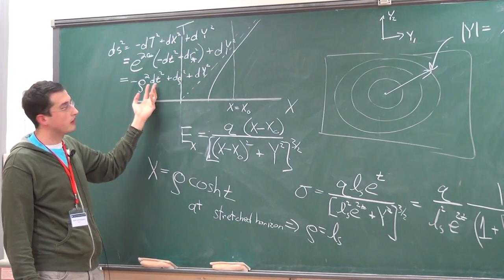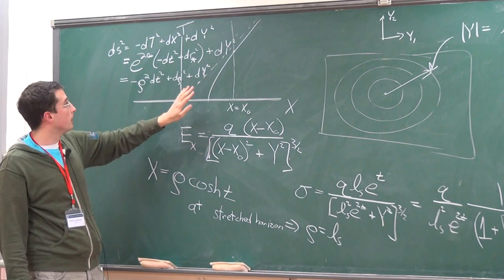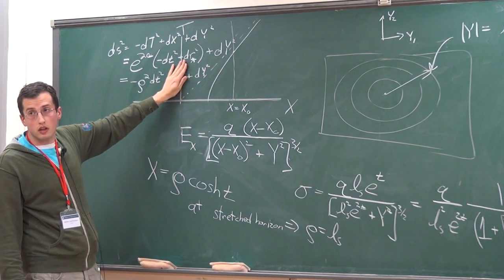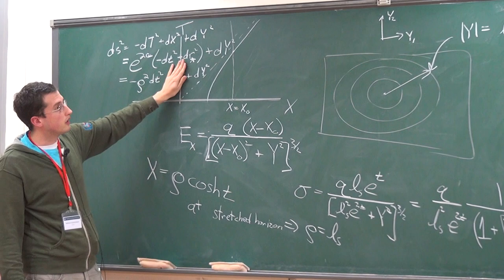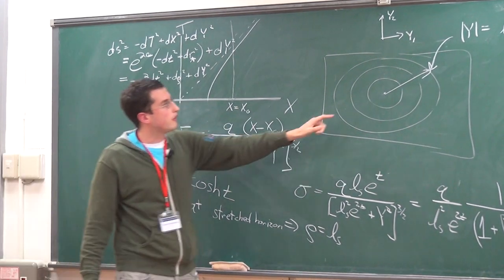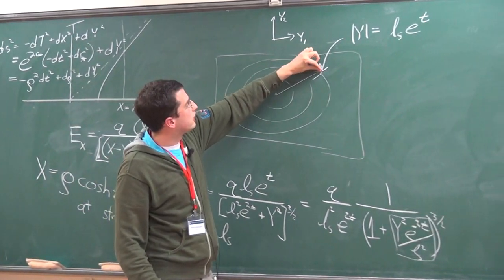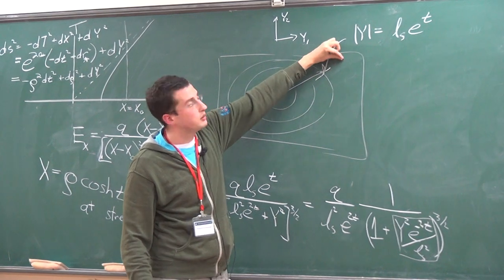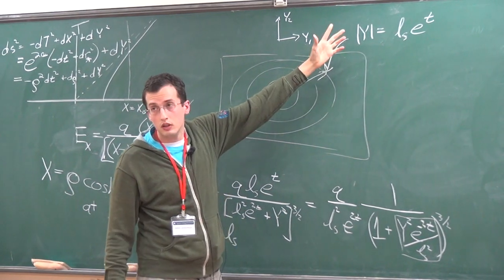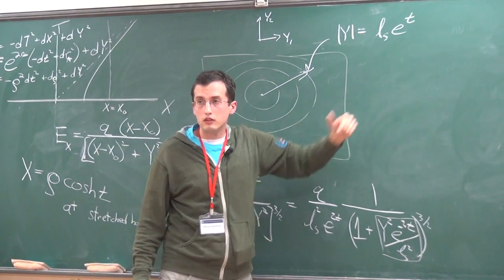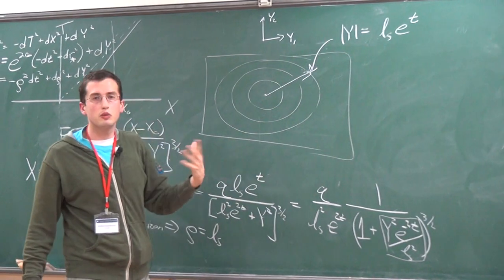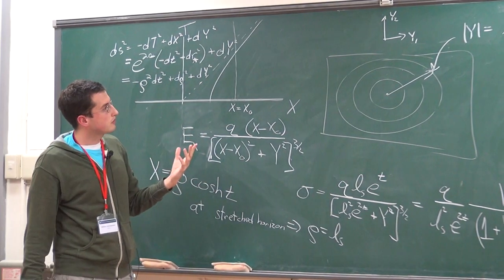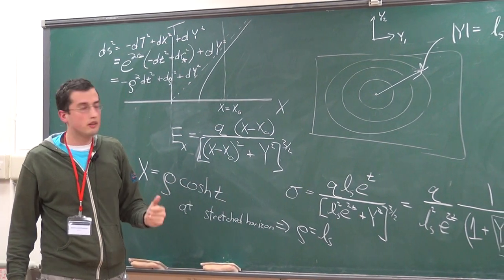If we look at the induced metric on the membrane at rho equals L-String, we get rid of that part and it's just dy squared and dt squared — a standard light cone. Whereas if I looked at the velocity of this spreading point, as if it were a charge carrier actually moving, it would be moving really fast. There's no actual violation of causality.